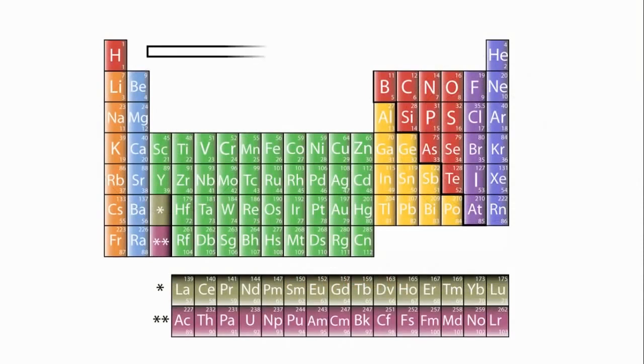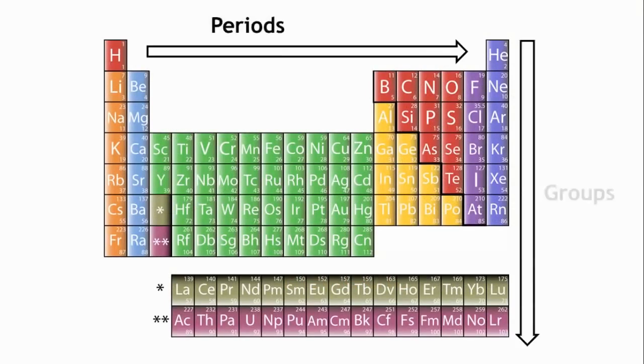The periodic table is arranged in periods and groups, going from the light elements at the top to the heavy elements at the bottom.